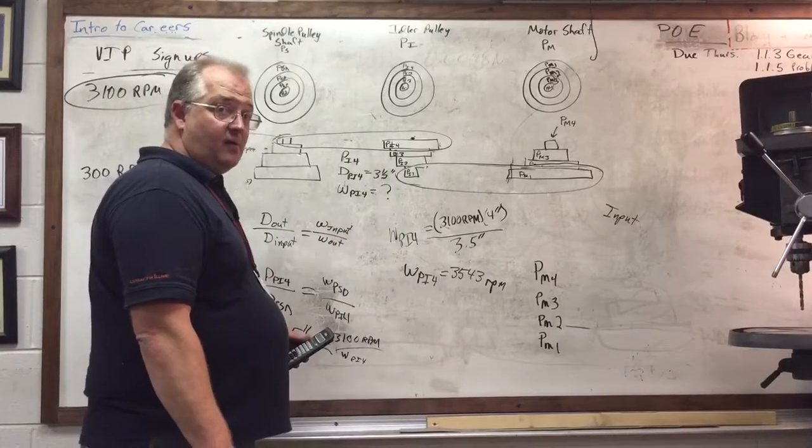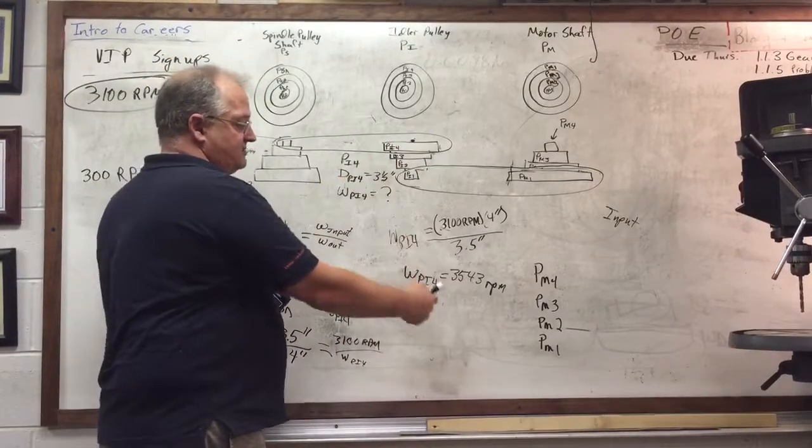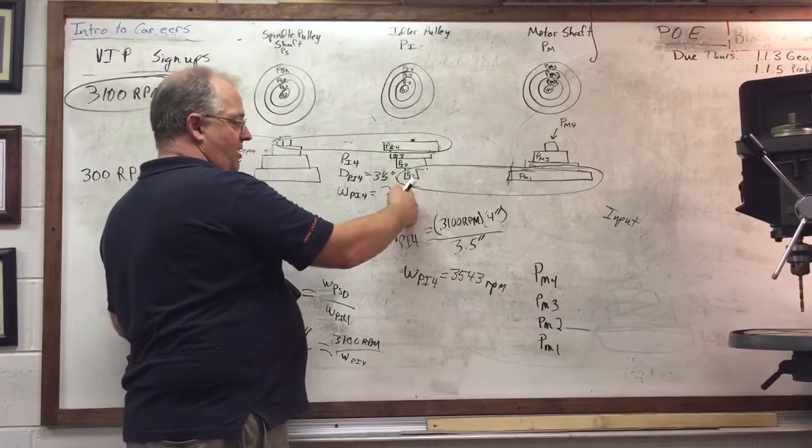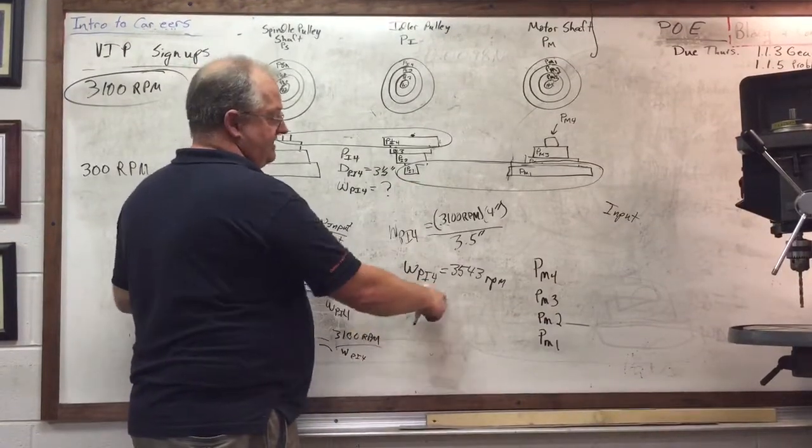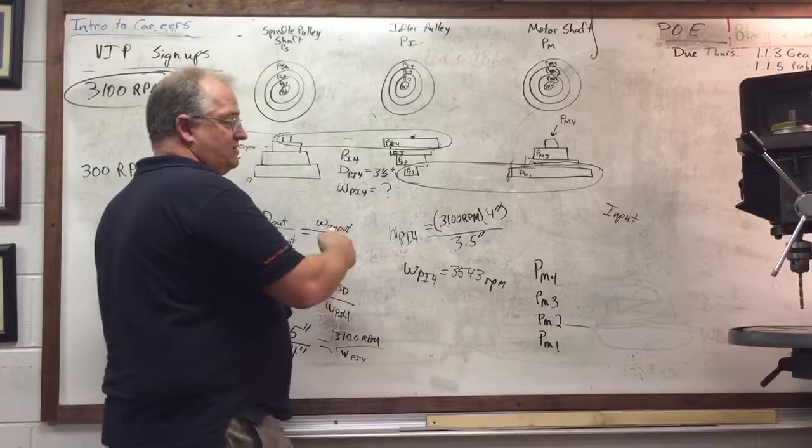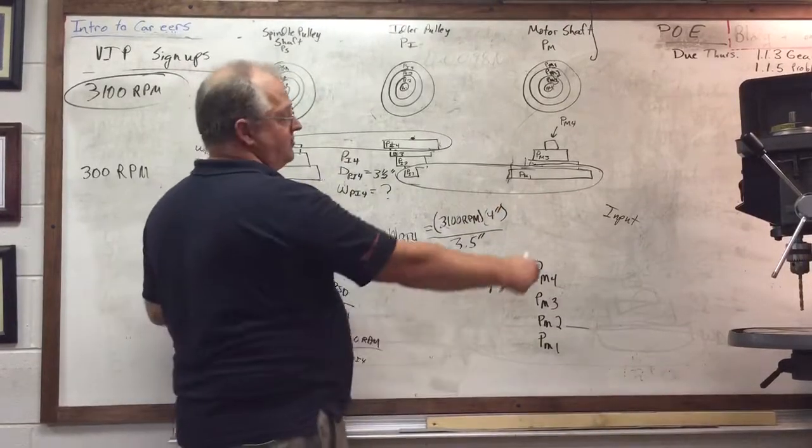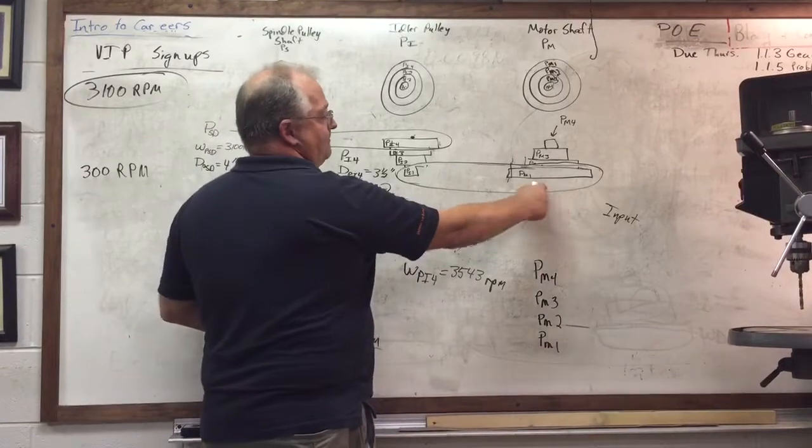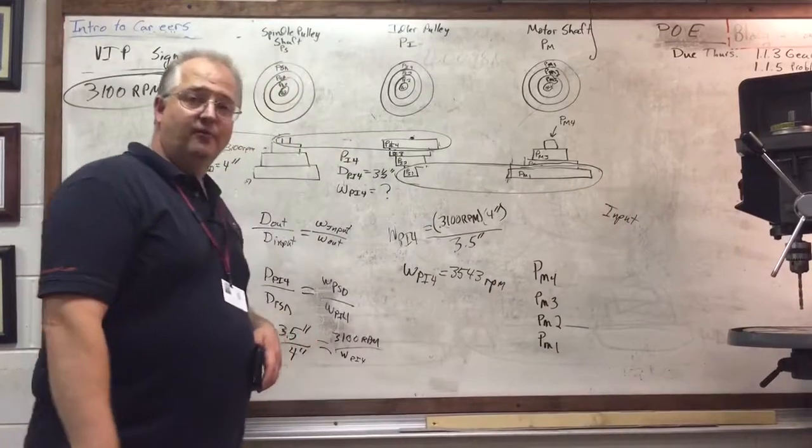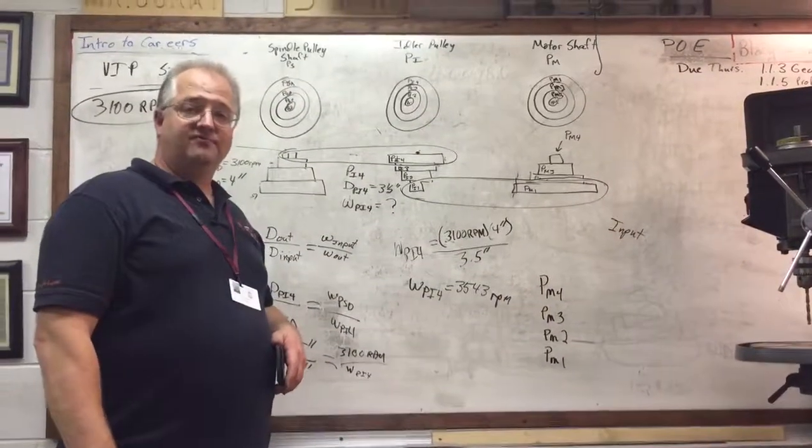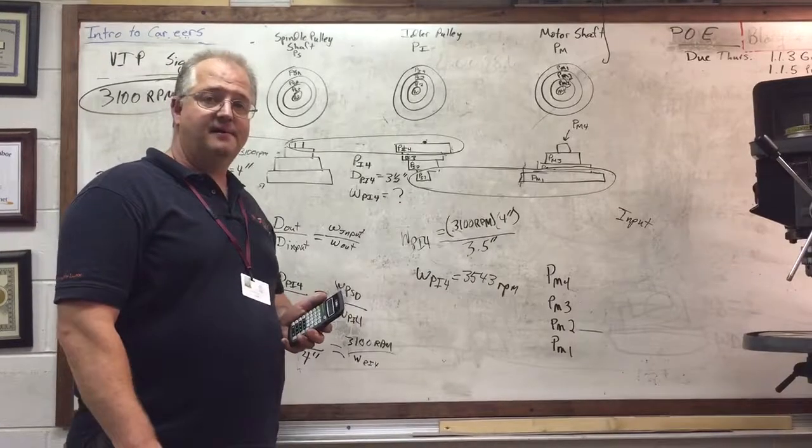Now, once I know that pi4 is rotating at that, pi1 is also rotating at that rpm. We're going to do the same thing going over. I'll do that in a later video so we can determine what PM1 is rotating at, and that will tell us what our motor actually rotates at. Thanks for watching. We'll come back and solve the rest of this later.